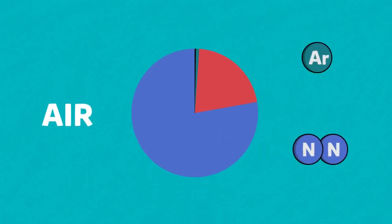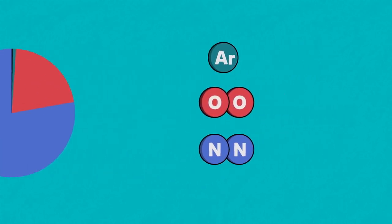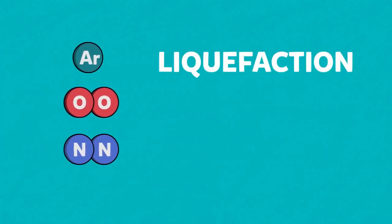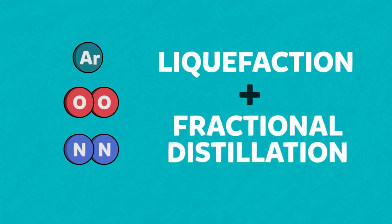Nitrogen, argon and oxygen can be separated from the air by liquefaction followed by fractional distillation.